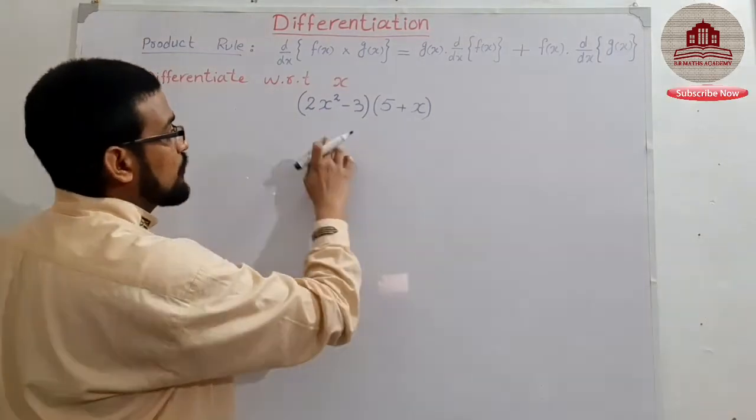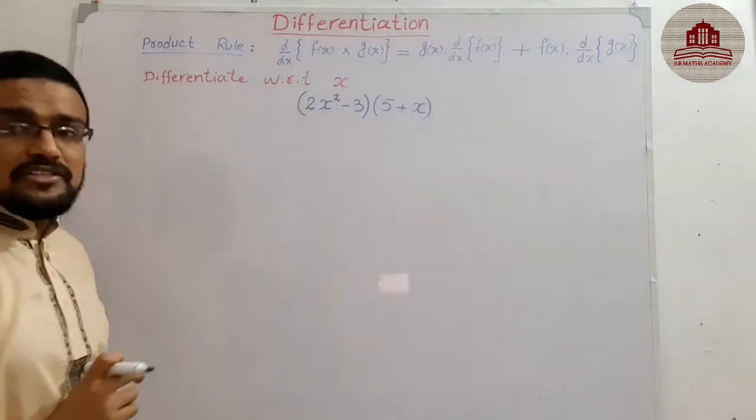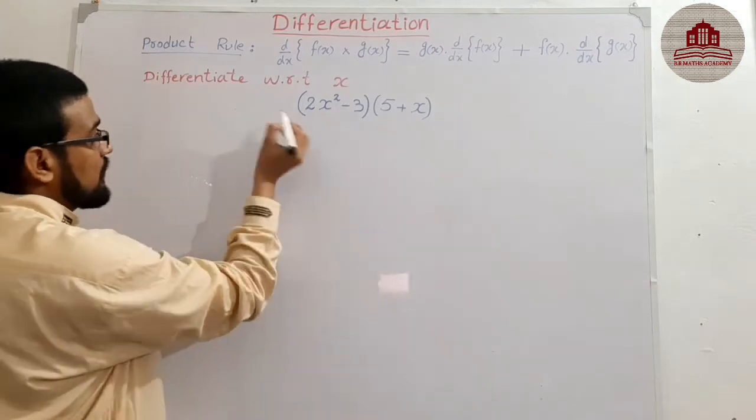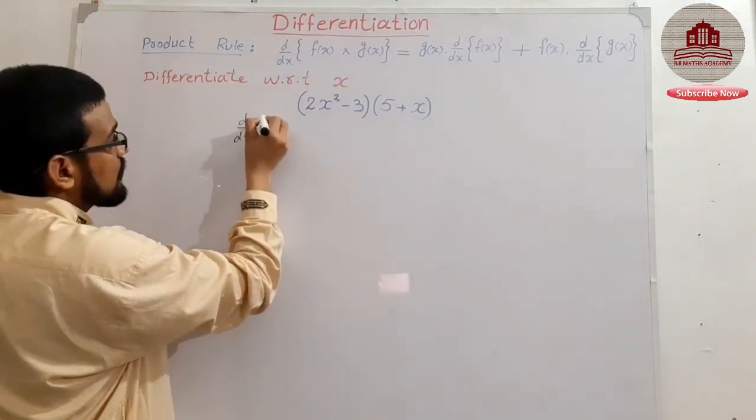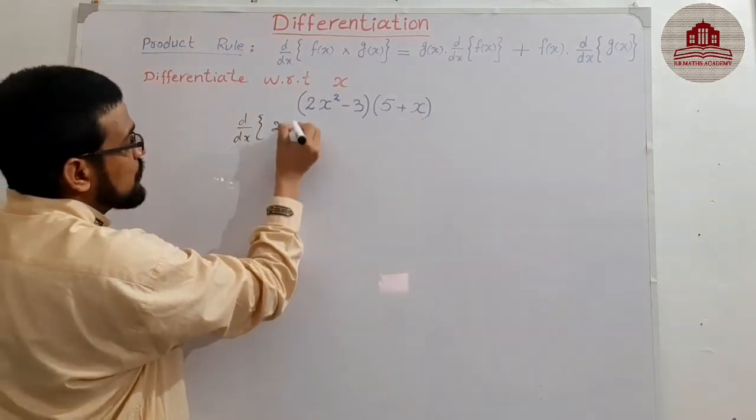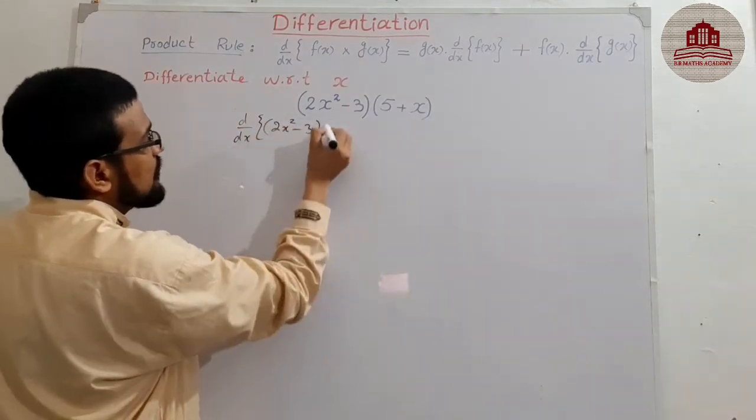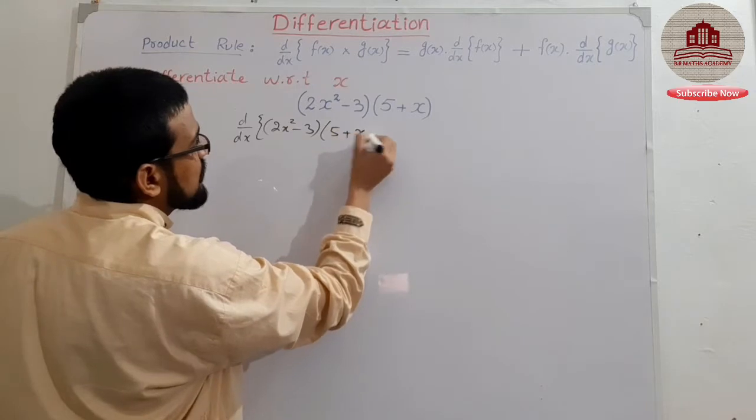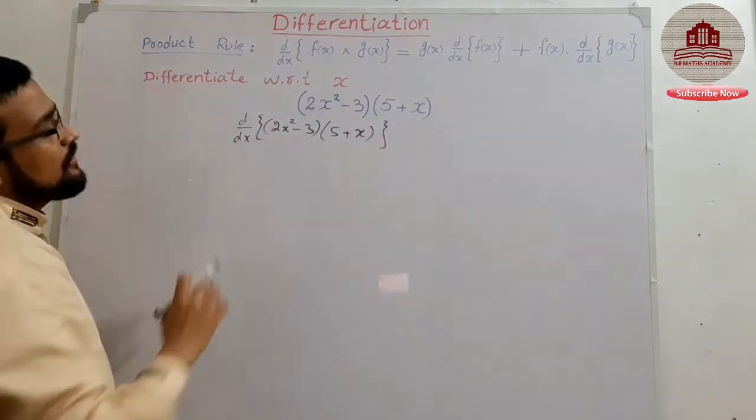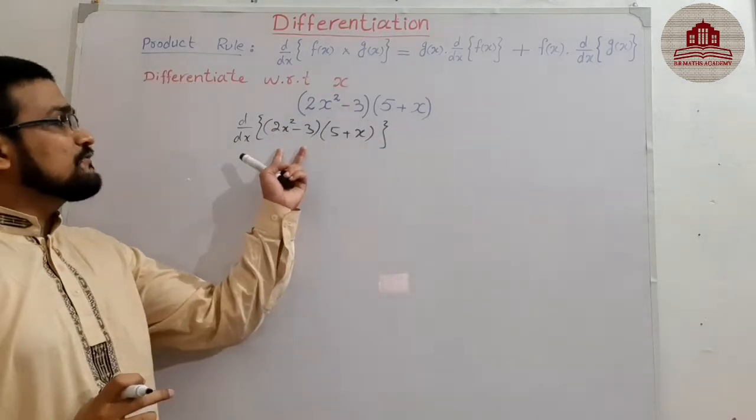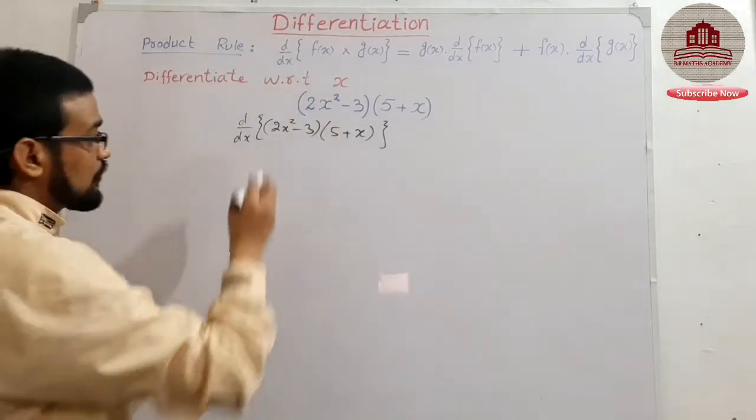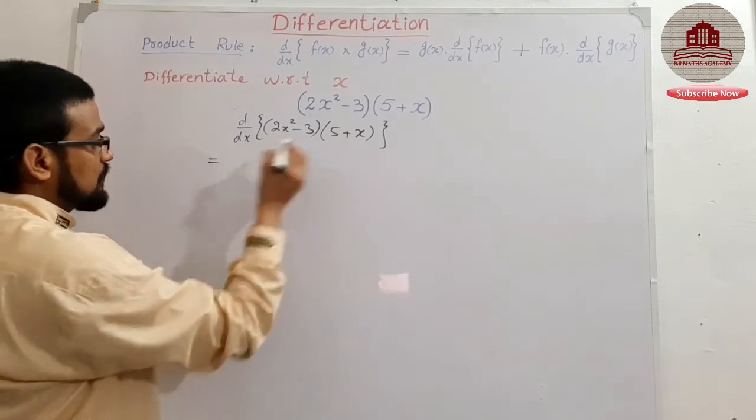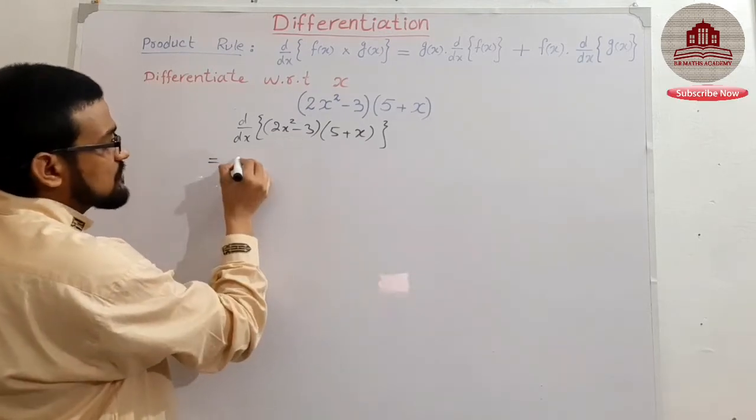Differentiate (2x² - 3) and (5 + x). Differentiate these, these functions in a product form, then we use the first rule we discussed in previous question.